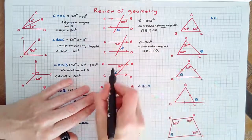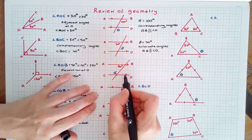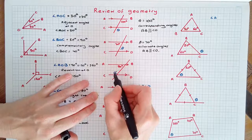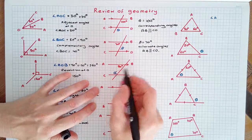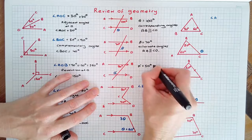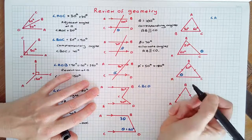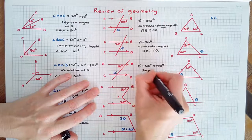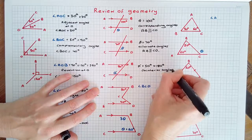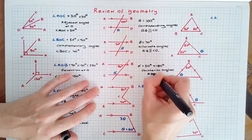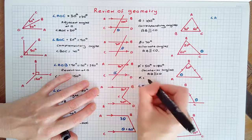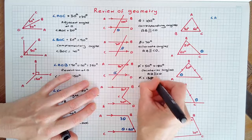And finally, since these lines are parallel, the co-interior angles are supplementary — that is, they add to 180 degrees. So alpha plus 50 equals 180 degrees because they're co-interior angles about parallel lines AB and CD. Therefore alpha is equal to 130 degrees.